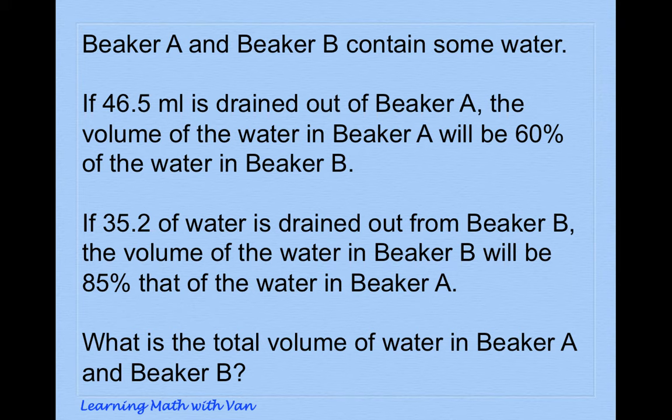and beaker B contain some water. If 46.5 ml is drained out of beaker A, the volume of the water in beaker A will be 60% of the water in beaker B. If 35.2 ml of water is drained out from beaker B, the volume of the water in beaker B will be 85% that of the water in beaker A. What is the total volume of water in beaker A and beaker B?